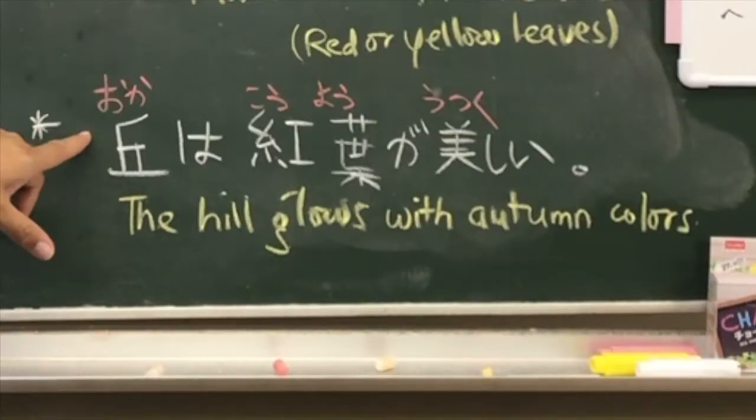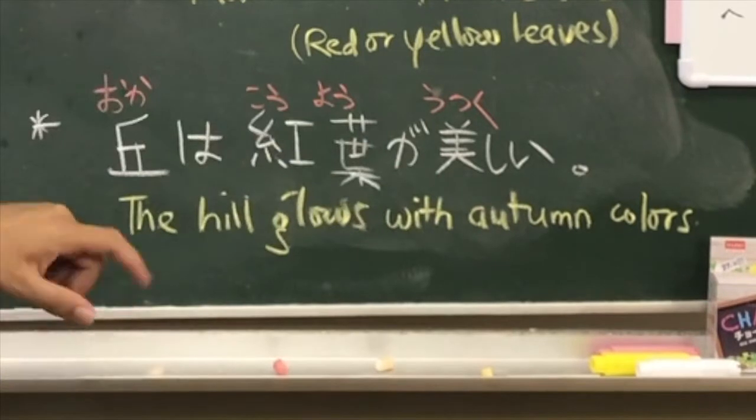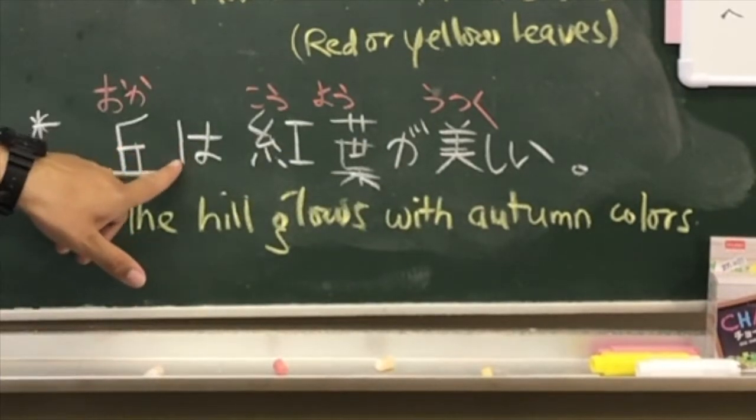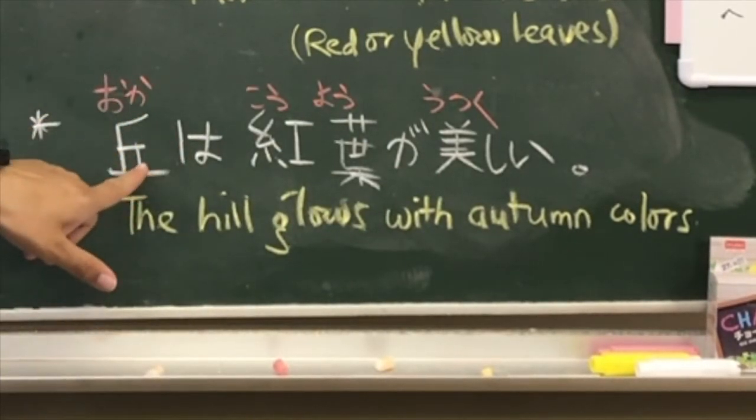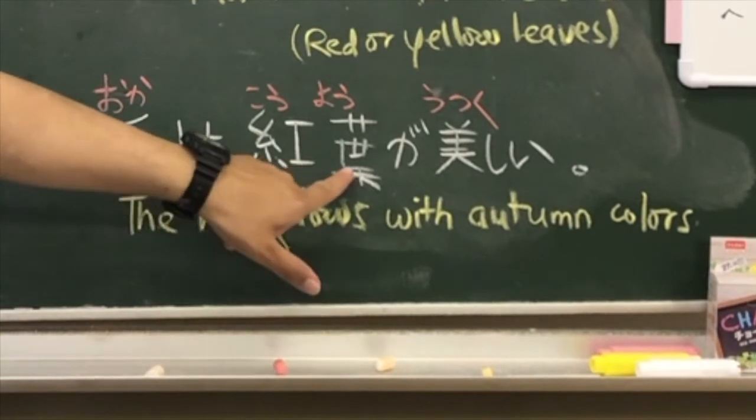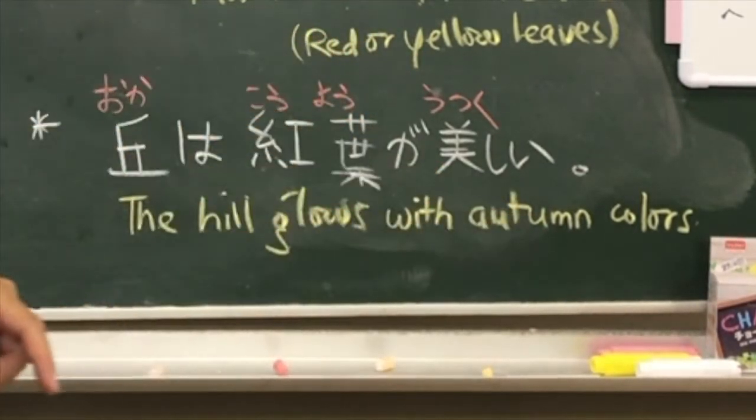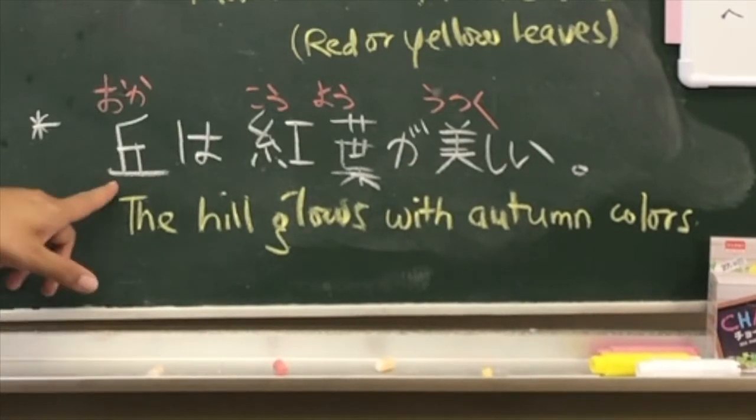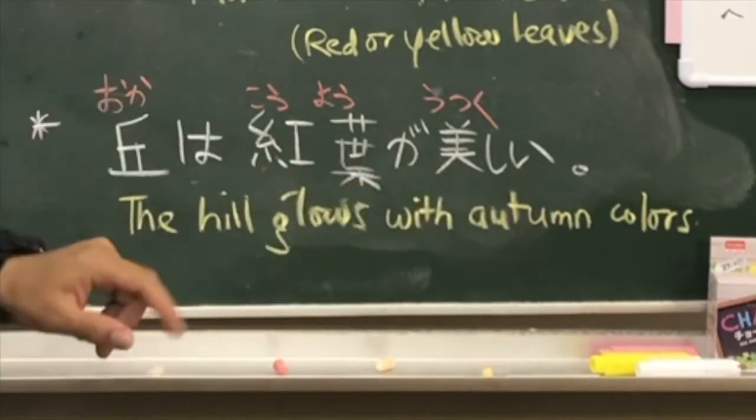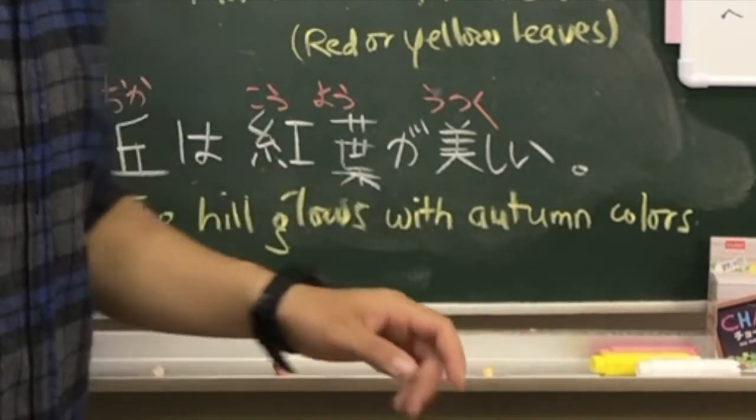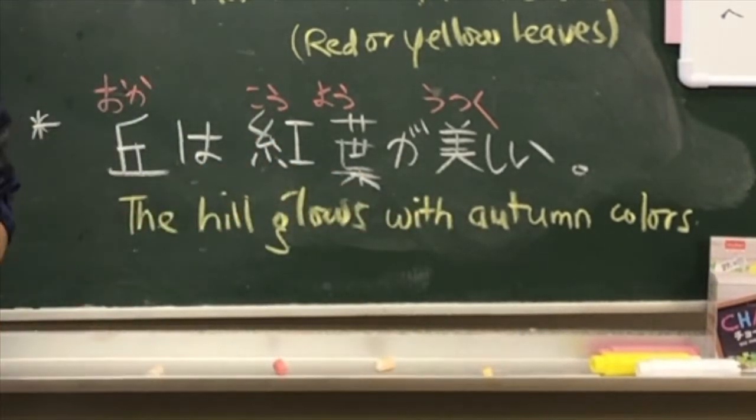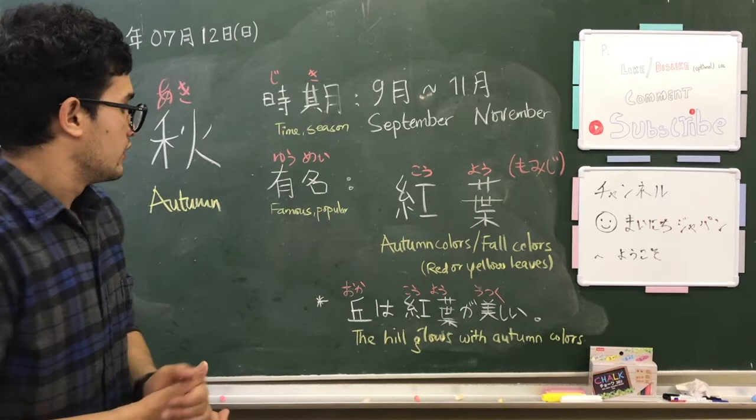I've written one sentence here: Oka wa kouyou ga utsukushii. Oka means hill, utsukushii means beautiful. So oka wa kouyou ga utsukushii means the hill glows with autumn colors - it looks spectacular.